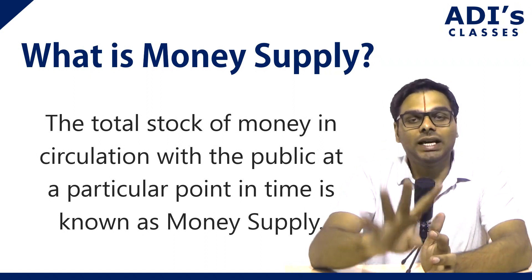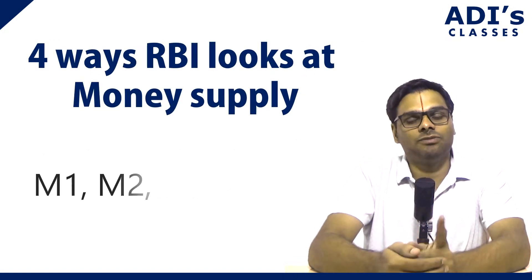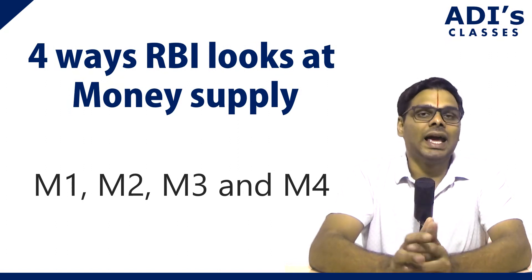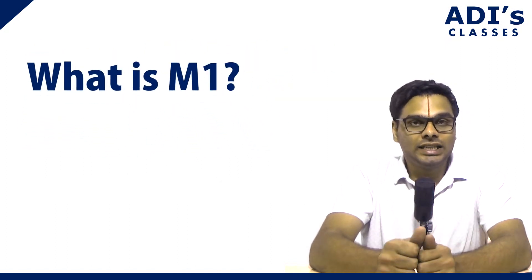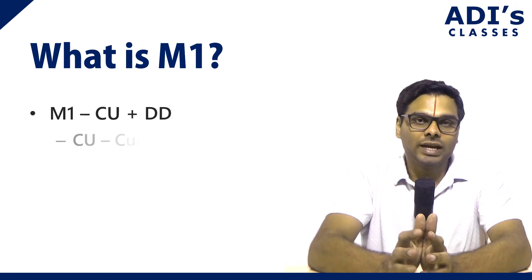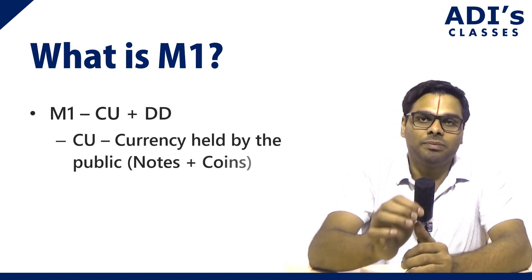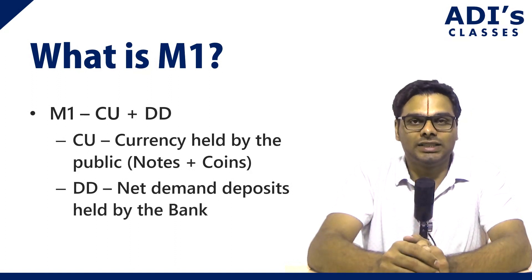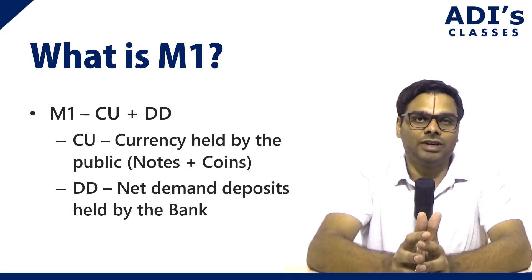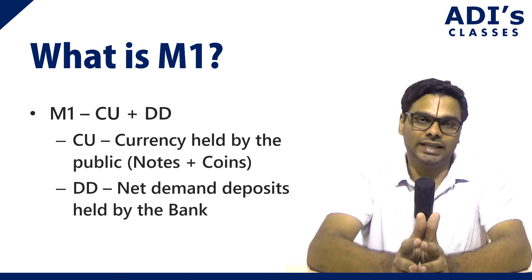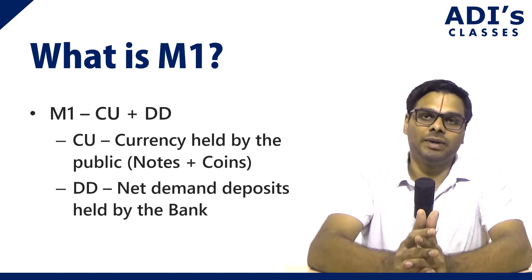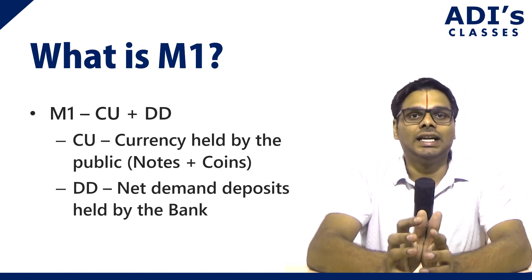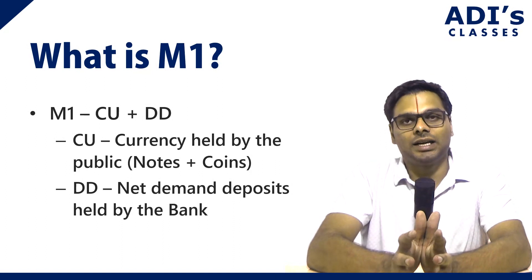The RBI looks at money supply in four different ways: M1, M2, M3, and M4. M1 is currency units plus demand deposits — that is, currency held by the public in notes and coins, plus net demand deposits held by the bank. So M1 is CU plus DD, where CU means currency held by the public (notes and coins included) and DD means net demand deposits held by the bank.